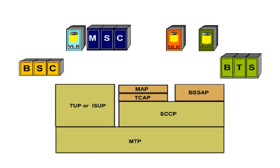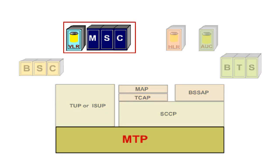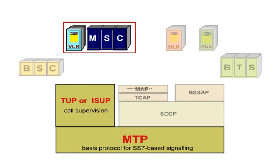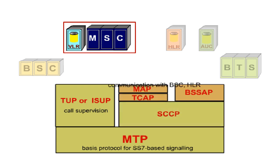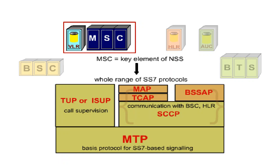As in all the other elements, MTP is the basis protocol in the MSC-VLR. Without it, there would be no SS7-based signalling. Furthermore, the MSC needs TUP or ISUP for call supervision. Since the MSC communicates with the BSC and the HLR, it also requires BSSAP and MAP, which are both based on SCCP. The use of MAP requires the presence of TCAP. Thus, the MSC, as the key element of the network subsystem NSS, must include the whole range of SS7 protocols.